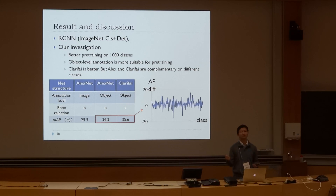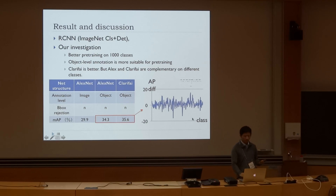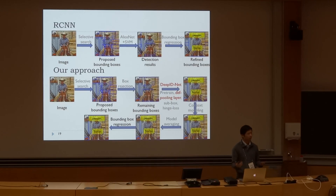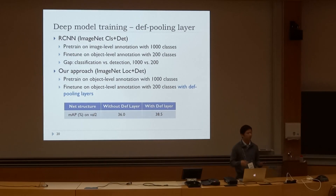However, the per-class difference between these models can be very large. For example, for the scorpion, the AP difference can reach about 20%, and about minus 20% for the hamster. Therefore, these two models are complementary with each other. Another component in our DeepITNet is a new layer — the def-pooling layer. With this layer, we can increase the mean AP from 36 to 38.5.